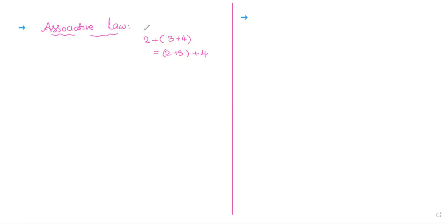This kind of grouping three numbers is called the associative law. The same associative law — is it applicable for vectors or not? For scalars and for numbers, it is applicable.